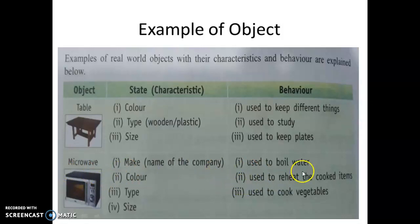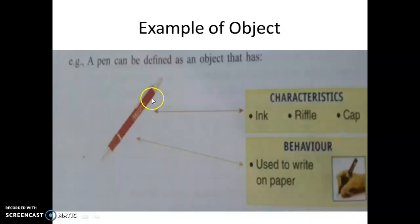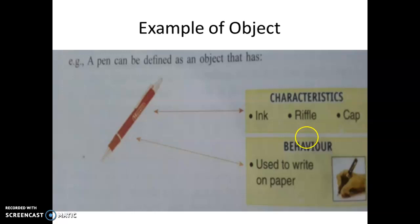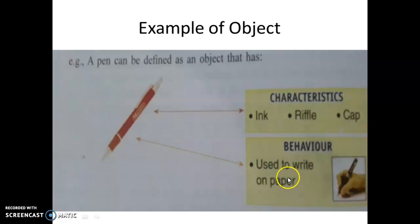This is the Microwave. Let's take another example: suppose a pen. Characteristics of pen are ink — it is blue ink or black or green or red, this is one of its characteristics. Then Refill — what kind of refill it is, gel or ball — that is another characteristic of a pen. Then Cap. Suppose its price and company name are also other characteristics. Then Behaviour means it is used to write on paper. So pen is an object which occupies some characteristics as well as behaviour.